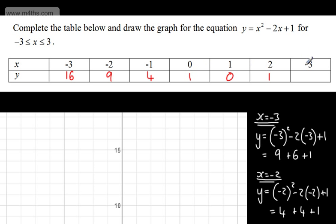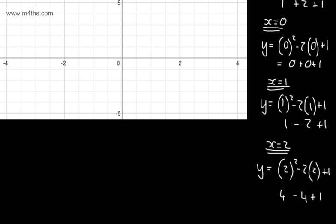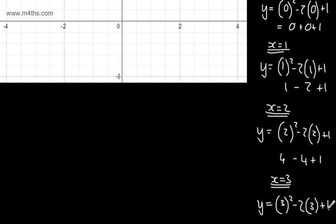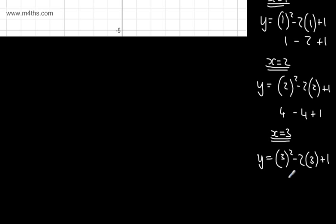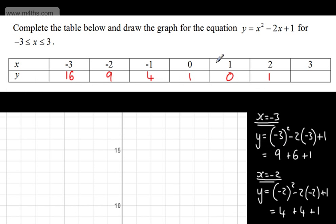For x = 3, based on the symmetry I know I'm going to get 4. Let me verify: y = 3² - 2(3) + 1 = 9 - 6 + 1 = 4, which is exactly what we expected.